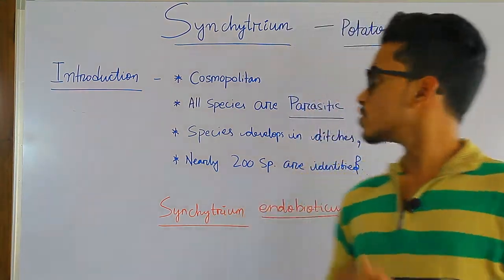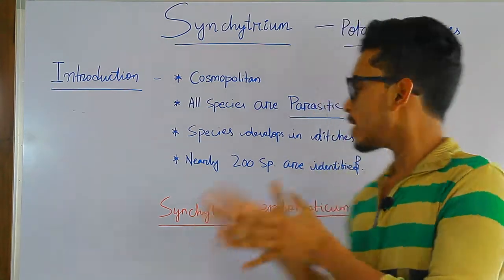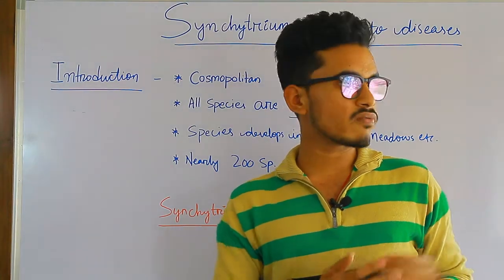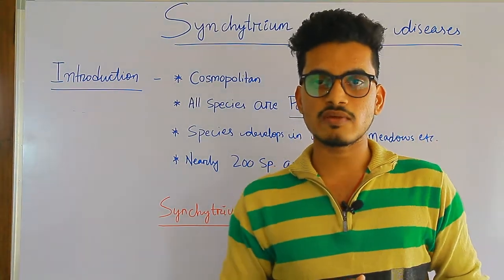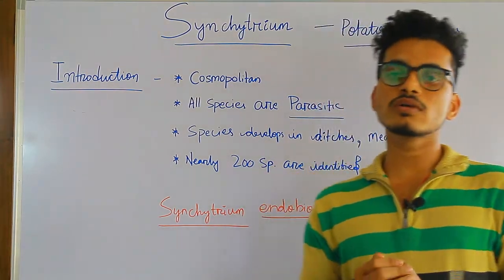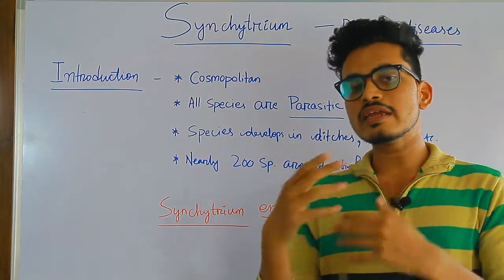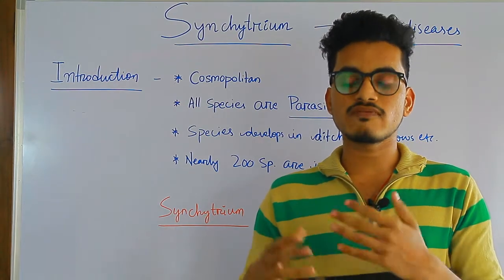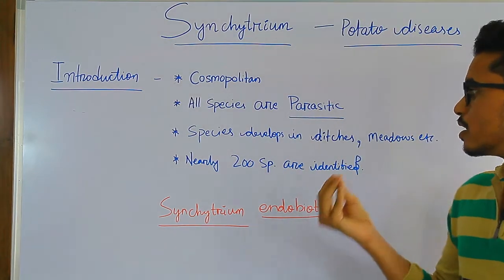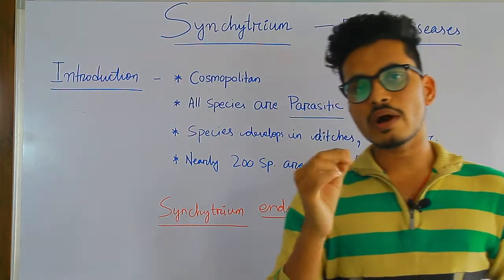The species develop in ditches and meadows. Why? Because zoospores of syncytium need water for development and germination. That's why they're present on beaches. Nearly 200 species are identified under syncytium.